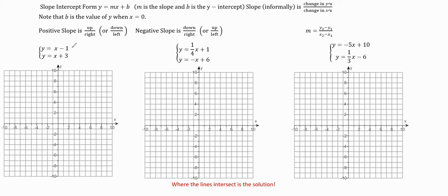The first one we're going to do is y equals x minus 1, and we're going to do that in blue. We start with the y-intercept, which is at negative 1, so we go down 1 and put a dot there. Our slope has a 1 in front, and 1 is the same thing as 1 over 1. This is positive slope, so we go up and to the right — up 1 and right 1 — giving us a second dot. There's nothing wrong with getting three points, but you only need two points for a linear equation.